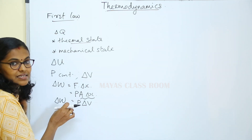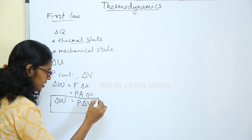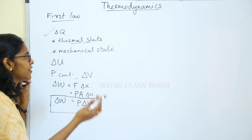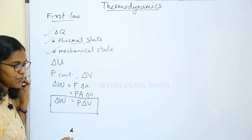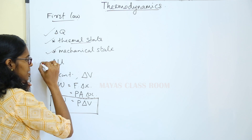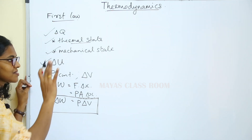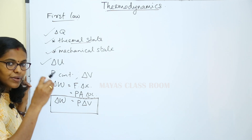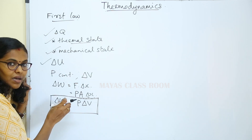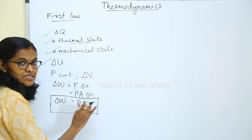The work done by the gas against the constant pressure is delta W is equal to P into delta V. The amount of heat applied is delta Q. Then we see the thermal state or mechanical state. If we look at the thermal state, there is a change of internal energy. The internal energy increases by delta U. Then the volume increases in the gas. The work done at constant pressure is delta W equal to P into delta V.